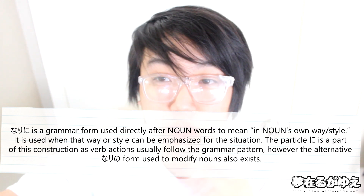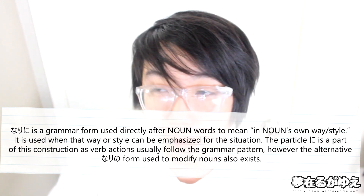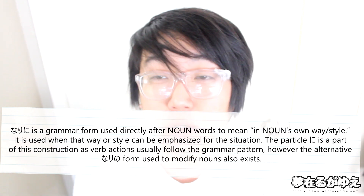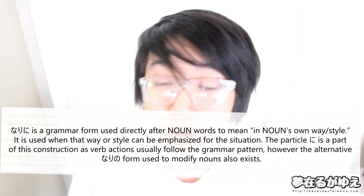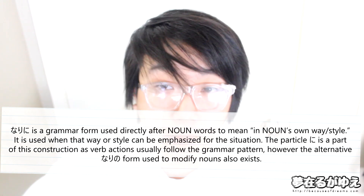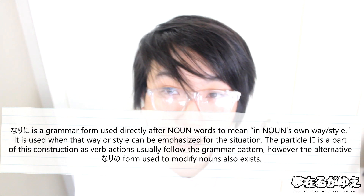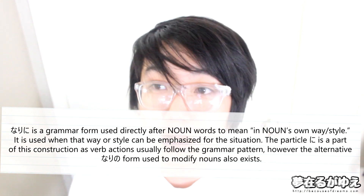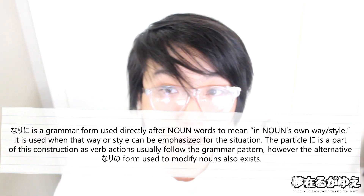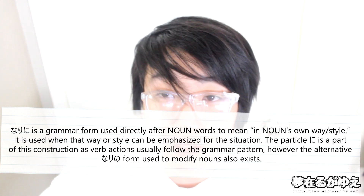In this video, we have this grammar pattern marked as narini because that's going to be the form most frequently used. We have the particle ni there because the ni particle is commonly used to mark an adverb that is modifying a verb action that follows. So narini is usually used to modify a noun and then a verb action follows. The alternative form narino also exists to modify a noun that is then going to describe another noun right after it.